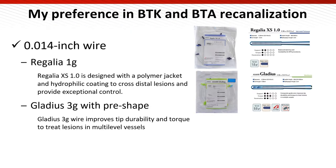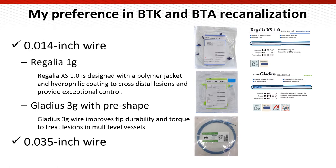This slide shows my preferred wires in BTK and BTA revascularization. My first wire is Regalia. If the CTO has a microchannel with calcification, Gladius, which has a 3g tip load with pre-shape, is also useful. If the lesion has severe calcification, an intentional sub-intimal approach using the 0.035 Terumo wire is mainly used.